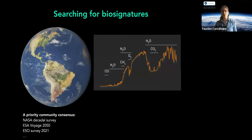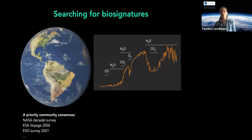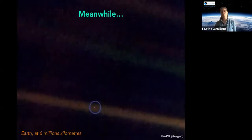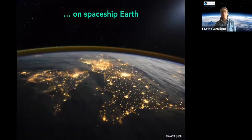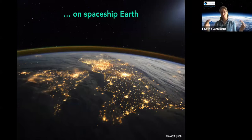We are really at the edge of searching for biosignatures on exoplanets. Here is a typical spectrum we see from Earth — the blue planet covered 70% by oceans. It's a community consensus in astronomy that it is a priority to look for signatures of life on all worlds, shown in the NASA Decadal Survey, the ESO Voyage 2050, and the ESO survey 2021. This is the famous image of the pale blue dot — Earth seen from six billion kilometers away — and on the right side you can see France, on the left the UK.